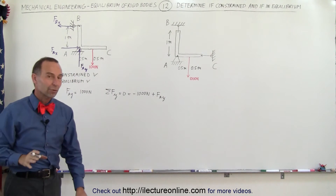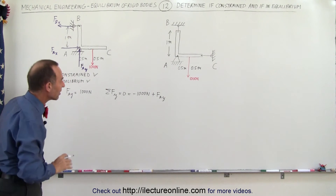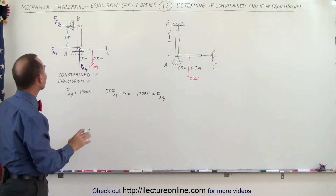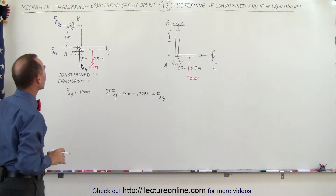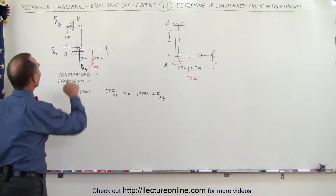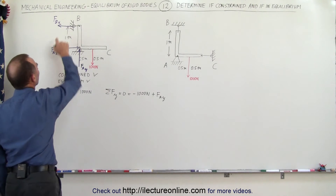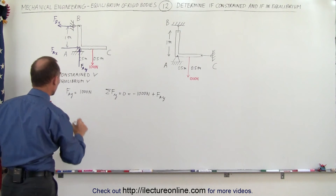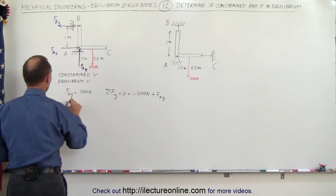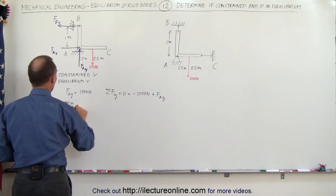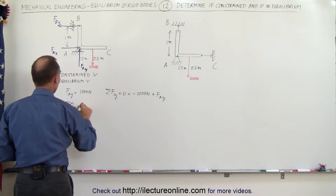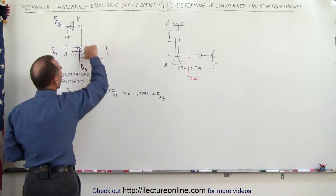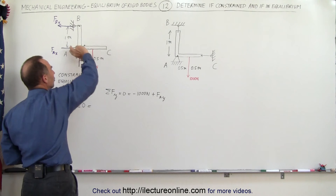So F sub A in the y direction must be 1000 newtons. In the horizontal direction we have two unknowns, but we also have the sum of the moments. The sum of the moments about point A must add up to zero.